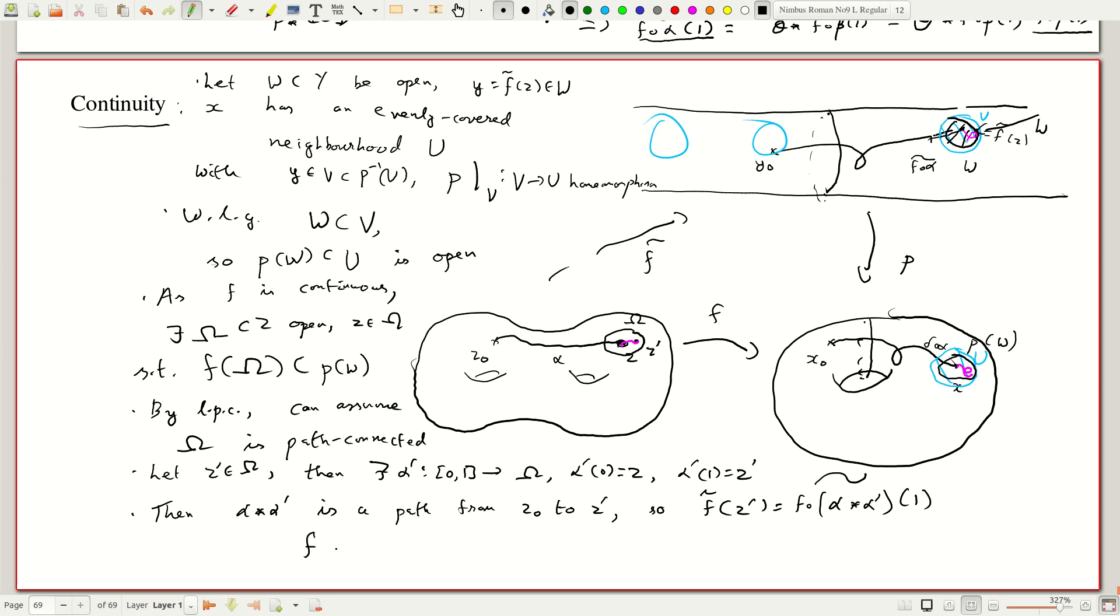So if I look at f composed with alpha, well this is f composed with alpha star, f composed with alpha prime, tilde, the whole thing tilde, that is the lift of this.